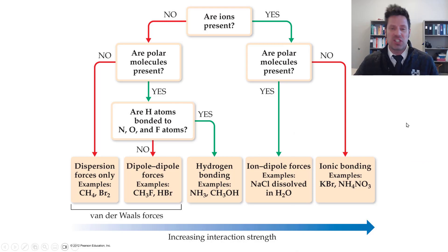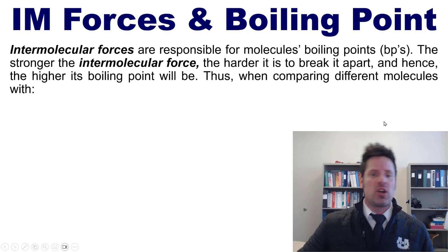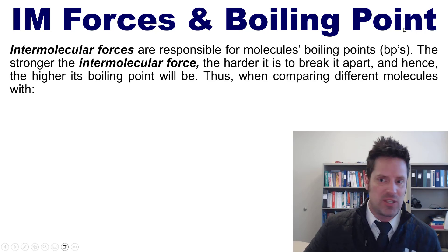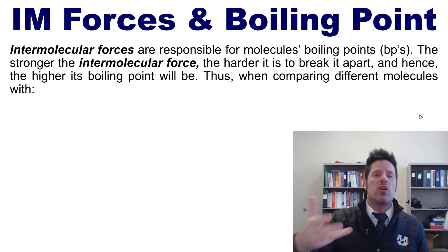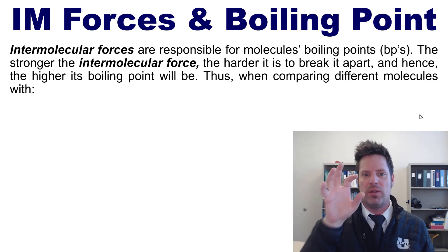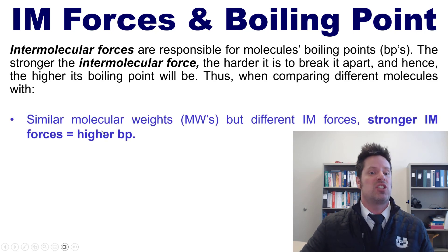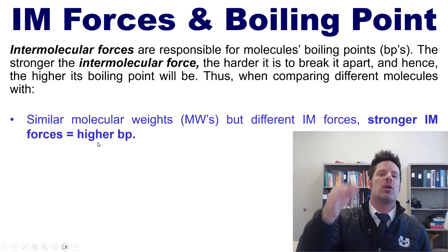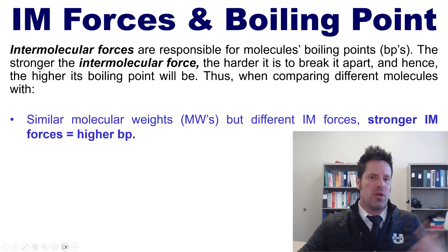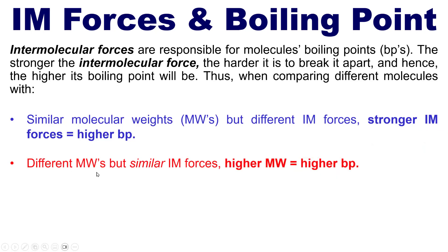How do intermolecular forces affect boiling point? The stronger the intermolecular force, the more intensely molecules stick to each other, and the harder it is to get them to wiggle and break apart — hence, the higher their boiling points will be. When comparing different molecules with similar molecular weights but different intermolecular forces, stronger intermolecular forces equals higher boiling point. When molecules have different molecular weights but similar intermolecular forces, higher molecular weight equals higher boiling point because there's more surface area of interaction.